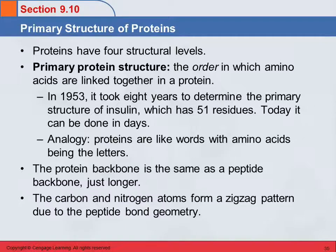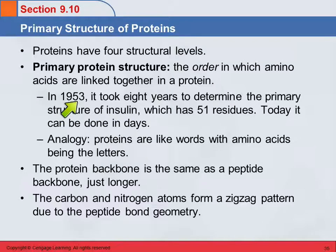Insulin was the first protein whose primary structure was determined. That was back in 1953, and it took eight years of work to establish the sequence of amino acids present in insulin — fifty-one residues. Eight years. Today, something like that could be done in a couple of days.